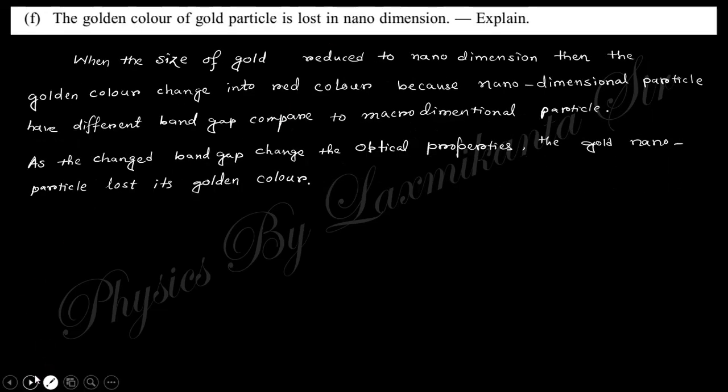Next question says: The golden color of gold particles is lost in nano dimension. Actually, when you reduce the size of nanoparticles, its band gap also changes, and this changed band gap reflects in optical property. That's why the reflection of the light as golden color changes into red color. This is the cause why the golden color is lost in gold nanoparticles because of the change in the band gap.